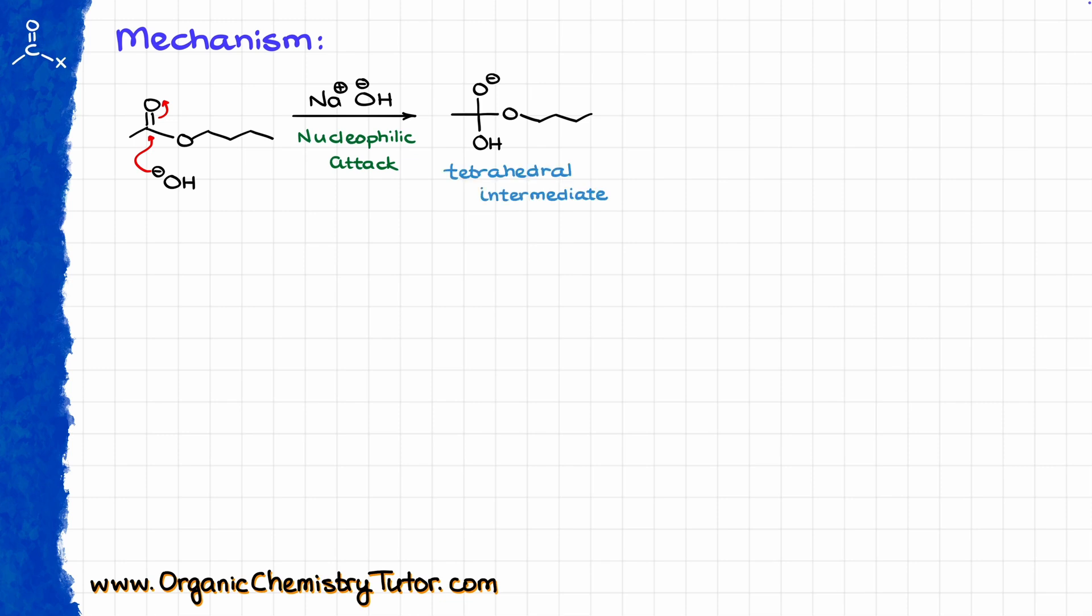And as with many reactions involving carboxylic acids and their derivatives, we often refer to this type of intermediate as tetrahedral intermediate, because the carbon atom that we have in the middle over here went from the trigonal planar to a tetrahedral state.